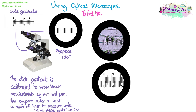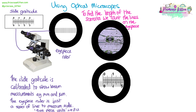Let's look at an example using the eyepiece ruler and slide graticule to measure something under the microscope. Here's an image of stomata on the underside of a leaf. To find the length of a stoma, I've twisted the eyepiece lens so the eyepiece units form a straight line and laid it over the stoma. Counting the eyepiece units that make up its length: one, two, three, four, five, six, seven — so it's seven eyepiece units.